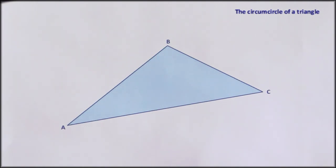In order to locate the circumcircle we need to use the perpendicular bisectors of the three sides.